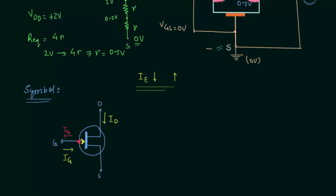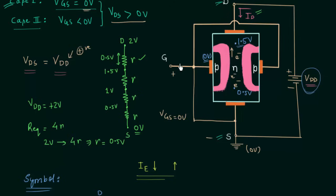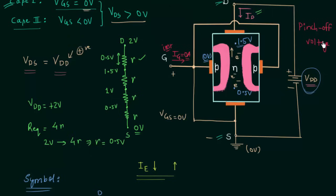Now we will talk about gate current. The gate current IG is equal to zero amps. The gate current is zero because the PN junction is reverse biased, and when a PN junction is reverse biased, the current through it is equal to zero amps. This is one very important point. In the next lecture I will explain pinch-off voltage, which is a very important topic.